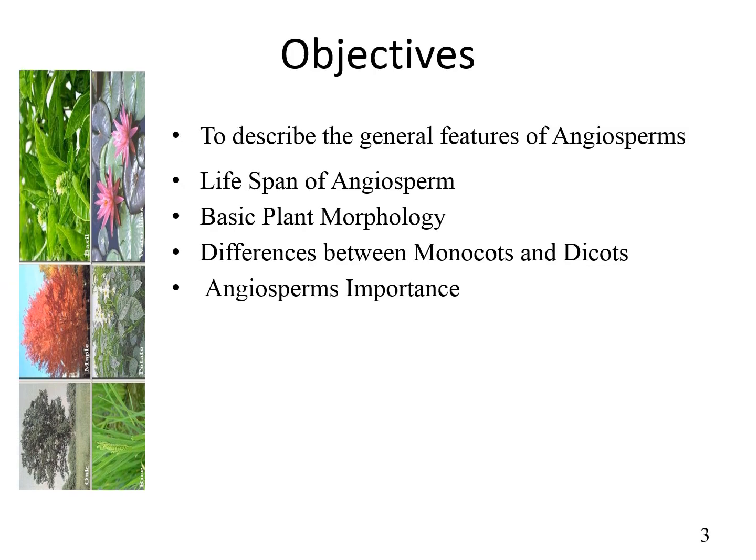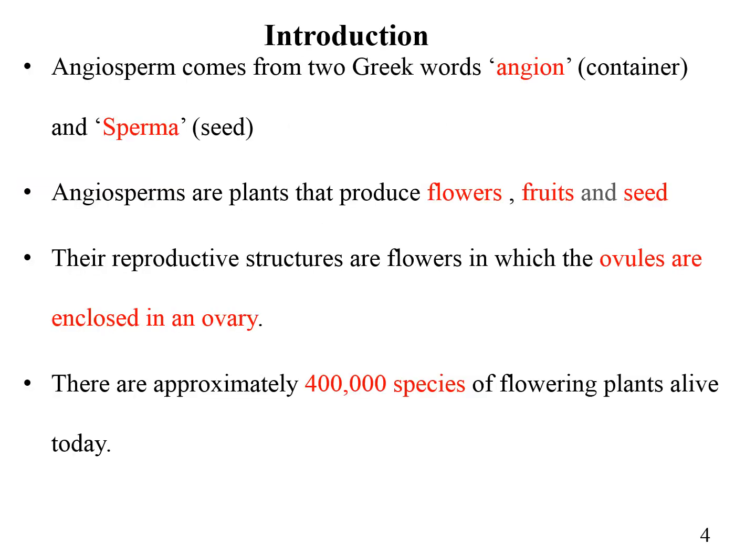From this lecture, students will understand about the key features of angiosperm, know about the basic plant morphology, be able to differentiate between monocot and dicot plants, and learn about the importance of angiosperm. The word angiosperm comes from two Greek words: 'angio' meaning container and